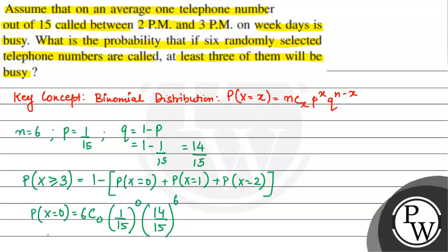Now p of x equals 1, that is going to be equal to probability of x equals 1, which is 6C1 times 1 by 15 to the power 1 multiplied by 14 by 15 to the power n minus x.